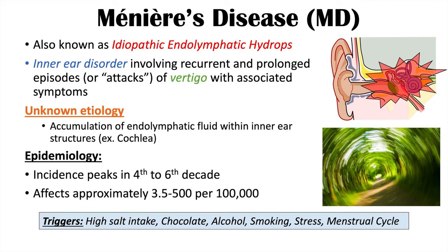There are a variety of triggers for these episodes or attacks of vertigo. Some of these triggers include high salt intake, chocolate, alcohol, smoking, stress, and the menstrual cycle. So changes in the menstrual cycle can also lead to these attacks as well. If you want more information on triggers of this condition, please check out my full lesson on this topic.